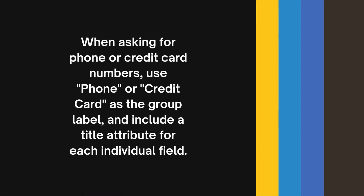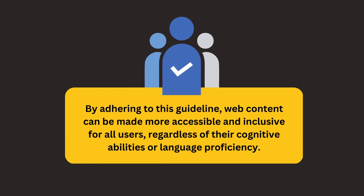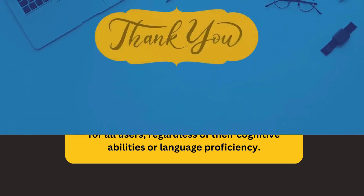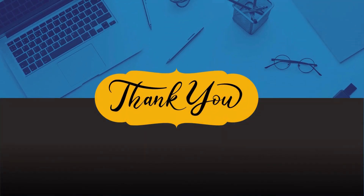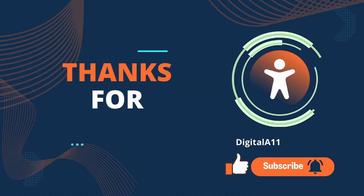In conclusion, labels or instructions make sure that web content is easily understandable by providing clear and concise language. By adhering to this guideline, web content can be made more accessible and inclusive for users regardless of their cognitive abilities or language proficiency. This is the end of the video. Thank you for joining. If you like the video, do like and subscribe.